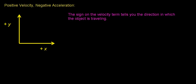The sign of the velocity term tells you the direction in which the object is traveling. As an example, if an object has positive velocity, it's going to be traveling in the positive direction. In this case, the velocity vector points in the positive x direction, and the object's going to travel in the positive x direction.